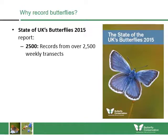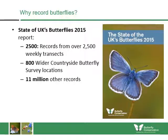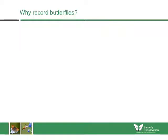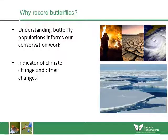The UK State of Butterflies 2015 report used records from over two and a half thousand weekly transects, as well as 800 wider countryside butterfly survey locations, plus 11 million other records. Reports like this require an enormous amount of data, and this is mostly collected by volunteers.